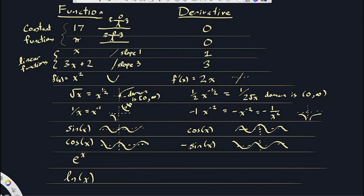e to the x is that amazing function which is its own derivative. e to the x is always above the x-axis. It has a landmark point at (0, 1), where the slope is 1. And the derivative is the exact same thing — it's always above the x-axis, with the same landmark point (0, 1), reflecting that the slope there is 1.